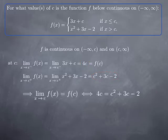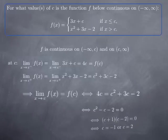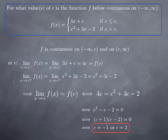For f to be continuous at c, we need the two one-sided limits to be equal: 4c = c² + 3c - 2. Rearranging gives c² - c - 2 = 0, which factors as (c + 1)(c - 2) = 0. Therefore c = -1 and c = 2 are the two values that make the function continuous on the entire real line.